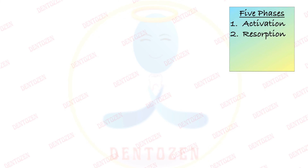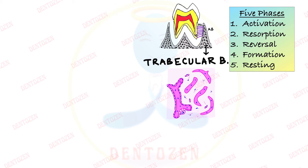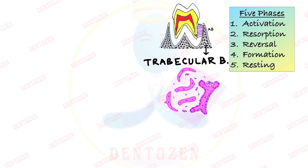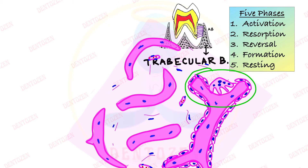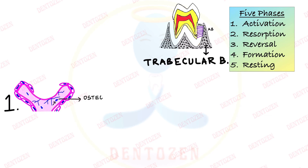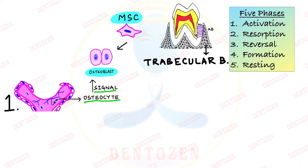In trabecular or spongy alveolar bone, the bone remodeling unit is a focal area. Activation begins when a signal — such as a crack — is sensed by osteocytes embedded within the bone. Osteocytes convert physical changes like cracks or hormonal changes into biological signals. This signal is received by osteoblasts, which alter their molecular expression to recruit osteoclasts for resorption.